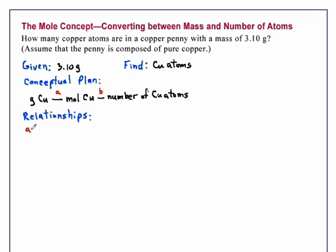Relationship A, which will allow us to convert from grams to moles, is the molar mass of copper. We know from the periodic table that one mole of copper has a mass of 63.55 grams. Again, this is the molar mass of copper.